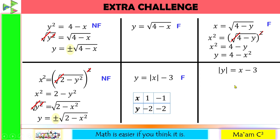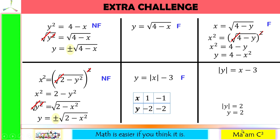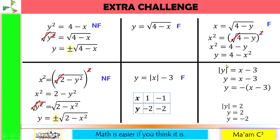Now let's have this one — this time y is inside the absolute value symbol. Recall the definition of absolute value: it is the distance of the number from 0. For example, the absolute value of y equals 2 means y could be 2, since the absolute value of 2 is 2, or y could be negative 2, since the absolute value of negative 2 is also 2. So y has two different values. In this equation, y could be x minus 3 or its opposite. This means when y is inside the absolute value symbol, it gives two different answers. Therefore, this equation is not a function.